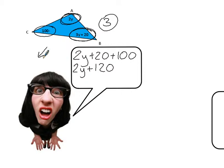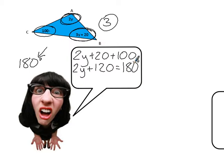Now I also know that triangles have 180 degrees. So I put equals 180 degrees and now I'm just going to solve it.